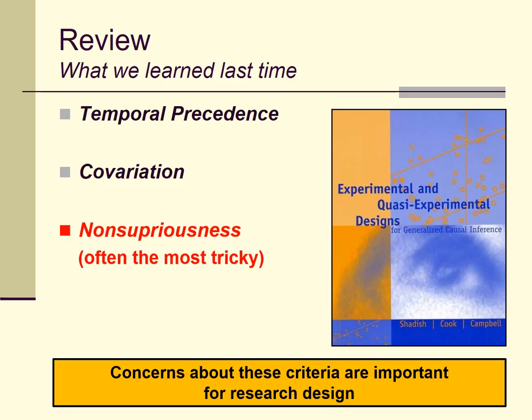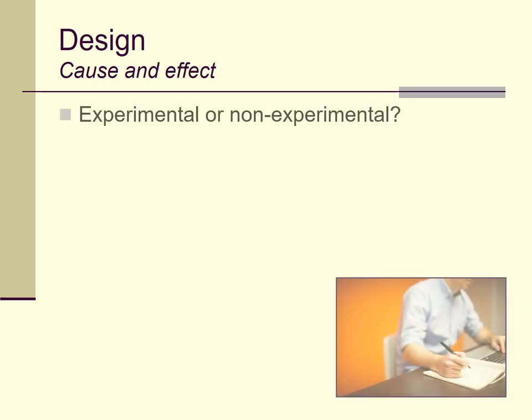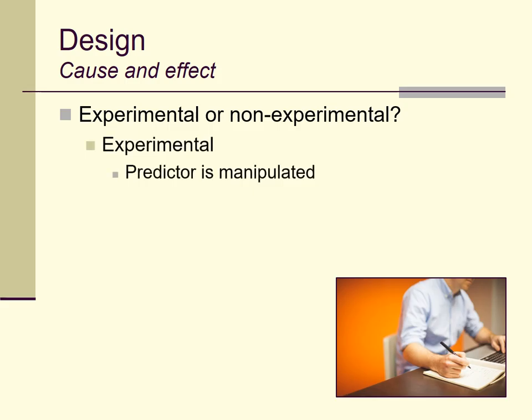With that in mind, let's focus on research design. Imagine we're interested in the relationship between a particular drug — say Paxil, an antidepressant and anti-anxiety drug — and level of depression. Broadly, we can consider studies that are either experiments or non-experiments. Experimental designs are those in which the predictor or independent variable is manipulated by the researcher; non-experimental designs are those in which it is not. Some textbooks, including ours, refer to non-experimental designs as correlational, because often what we're doing is observing a correlation between a predictor and an outcome variable.